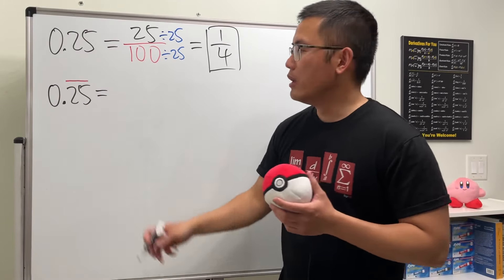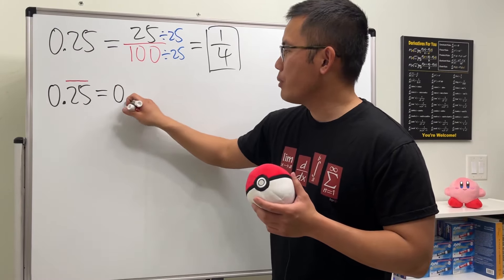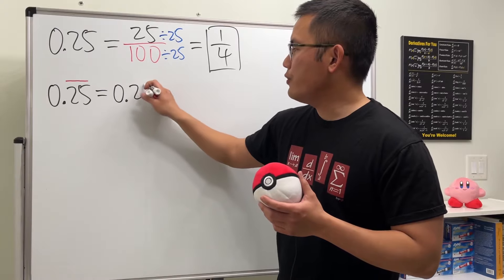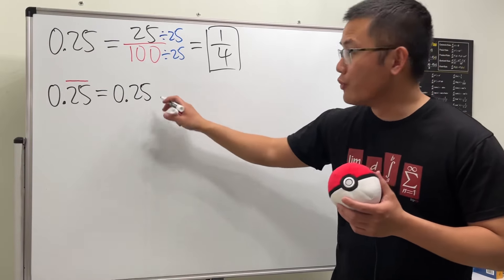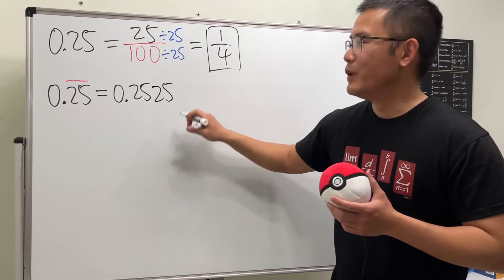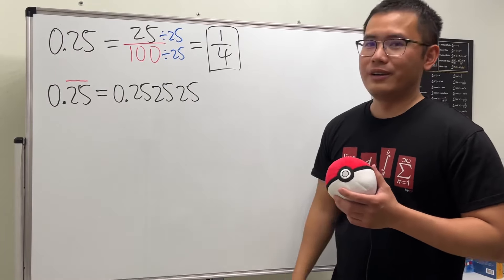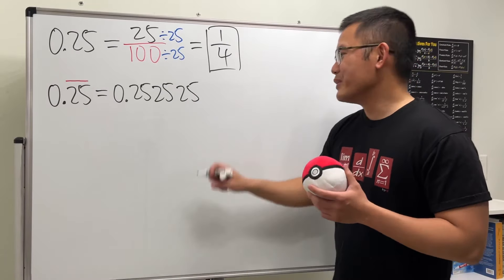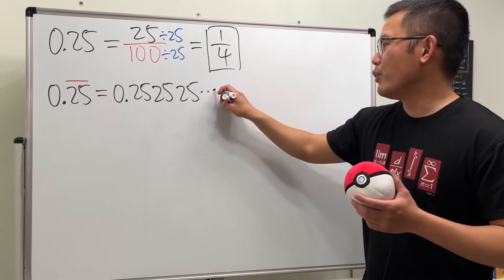So this means we have 0.2525, and then 25 again — but how many more? Infinitely many more.